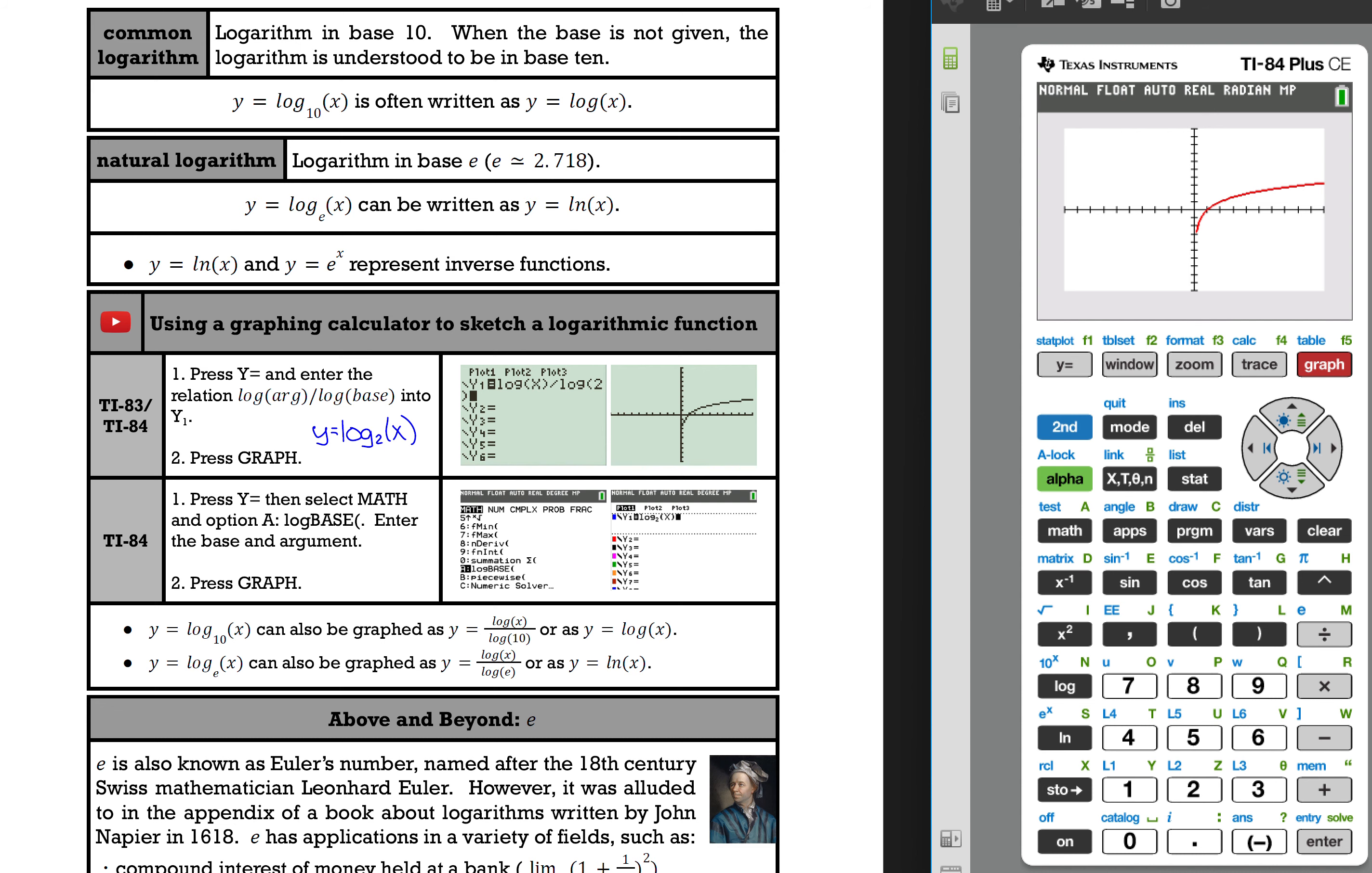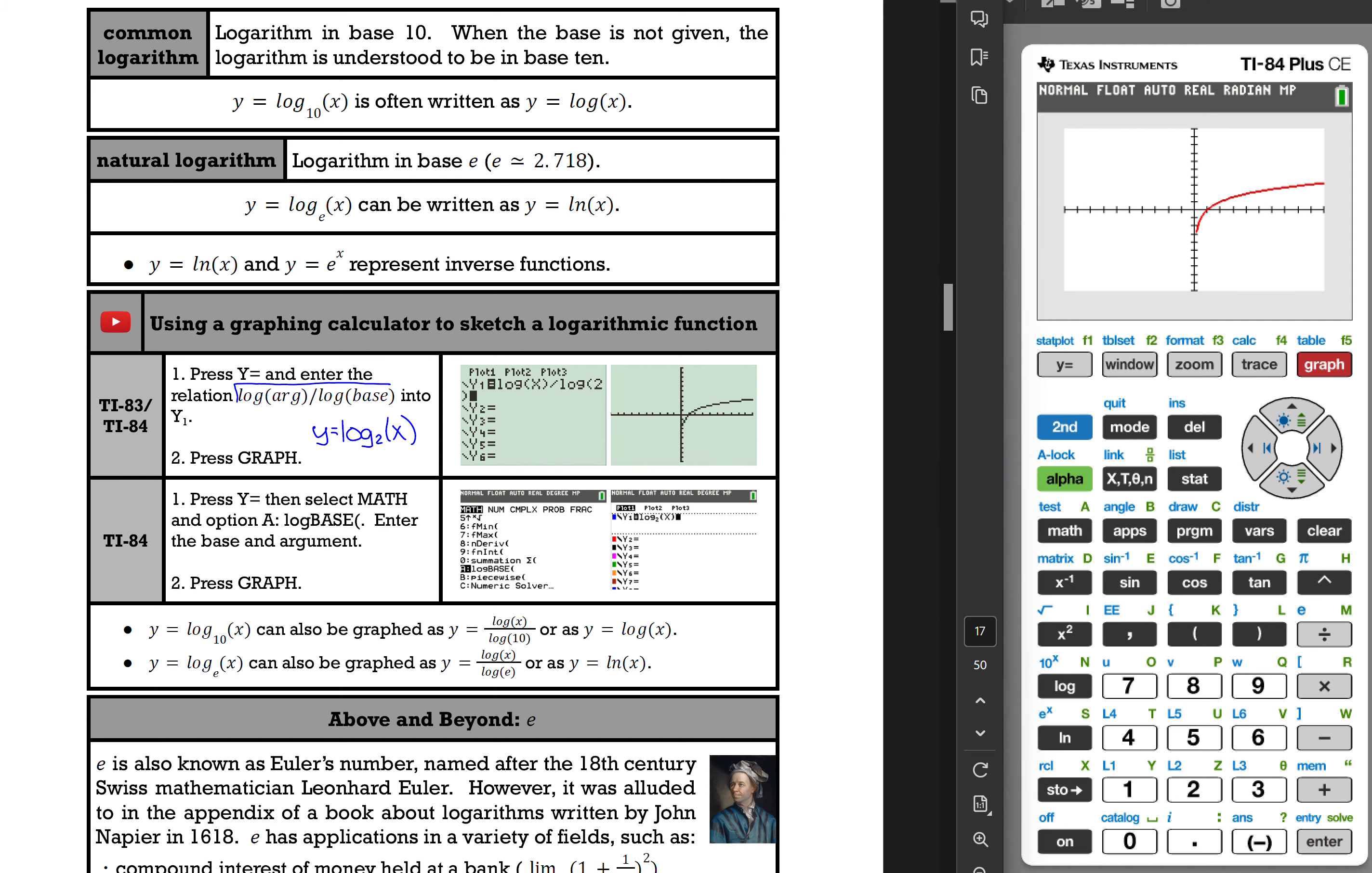But keep in mind if you have a TI-83, you'll need to stick with option number 1. That change of base identity is quite handy. You'll want to take the log of the argument and divide it by the log of the base.